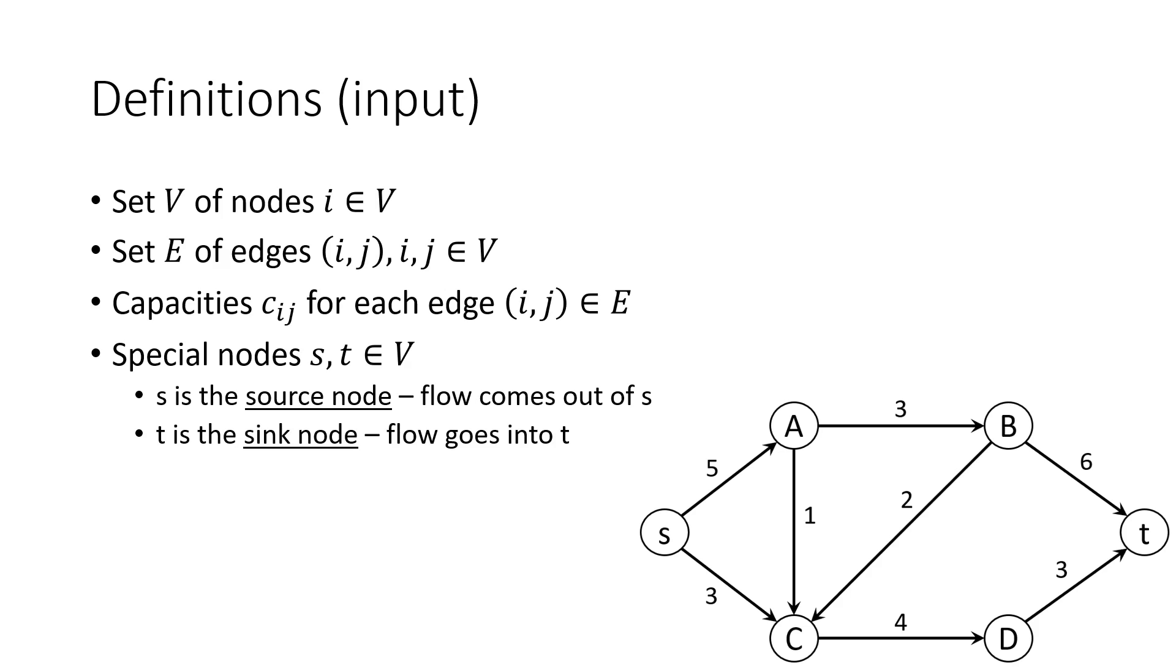Here we define the input to the max flow problem, more formally, with set notation. This is essentially the same as what I just went over. We have nodes and edges, capacities for each of the edges, and a source and a sink.